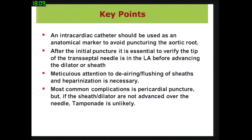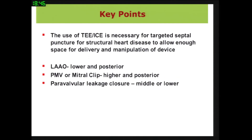In conclusion, intracardiac catheterization landmarks should be used as anatomical markers to avoid aortic root puncture. After initial puncture, it is essential to verify the needle tip is in the LA before advancing the dilator or sheaths. Meticulous attention to airing and flushing of sheaths and heparinization is necessary. The most common complication is pericardial puncture, but tamponade is very unlikely if sheaths or dilators are not advanced over the needle. TEE or ICE is necessary for targeted septal puncture in structural heart disease. For LAA occluder: lower and posterior; for PMV or MitraClip: higher and posterior; for paravalvular leak closure: middle or lower. Thank you.